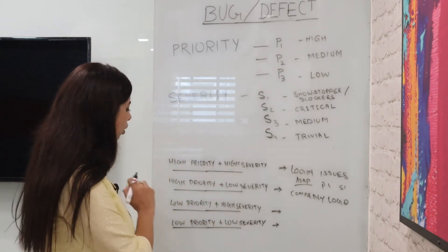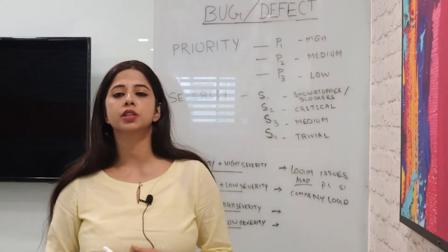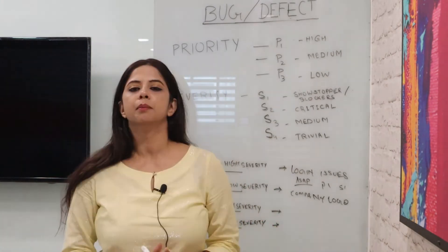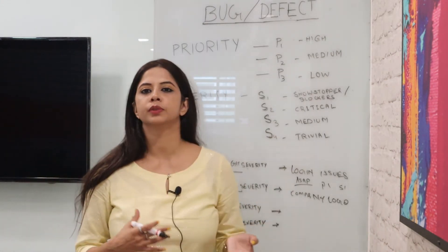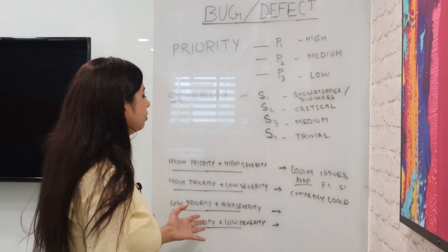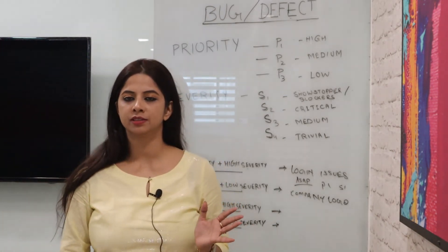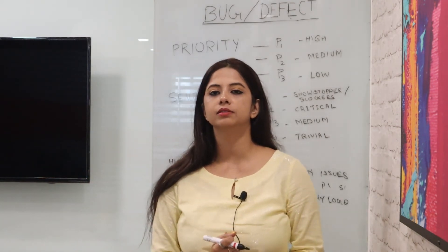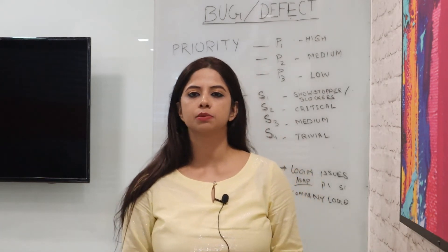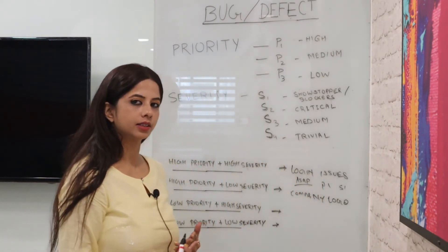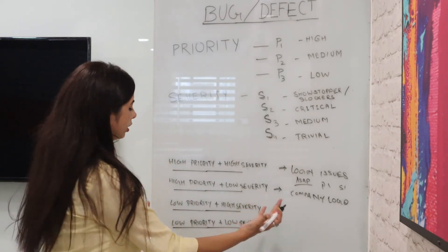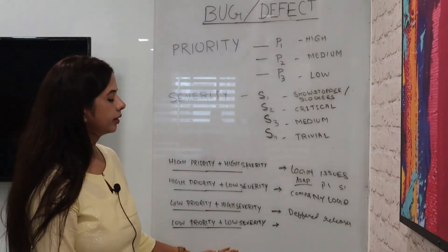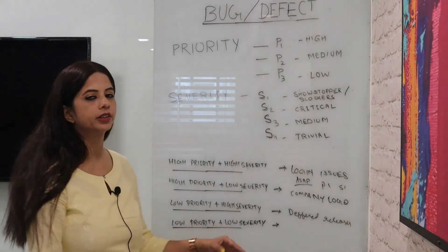Now let's talk about low priority and high severity. There can be issues which exist in the system and need to be fixed at high severity, but the management has decided to defer the release of that feature to the next build. Any bug related to a release happening in the future or the next build, but which is a critical point for the application, will fall into the category of low priority and high severity — deferred releases.